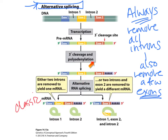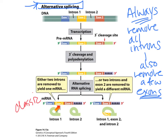If on the other hand we do all of the same stuff but we decide we want to clip out exon 2 as well — GU to AG removes exon 2 — this lariat or excised intron also contains the exon. This is degraded just like the introns. We have a different mRNA which results in a different sequence of amino acids, because we're missing a bunch of amino acids.